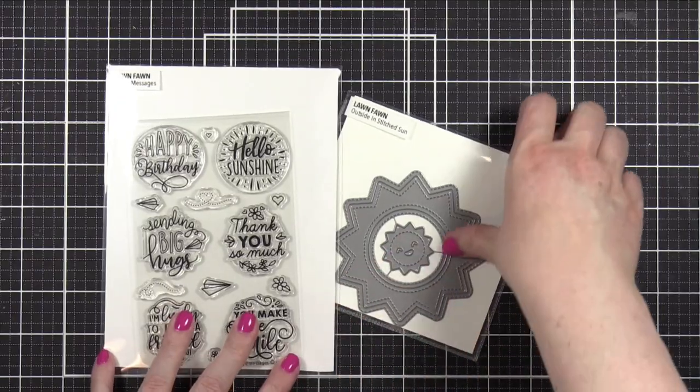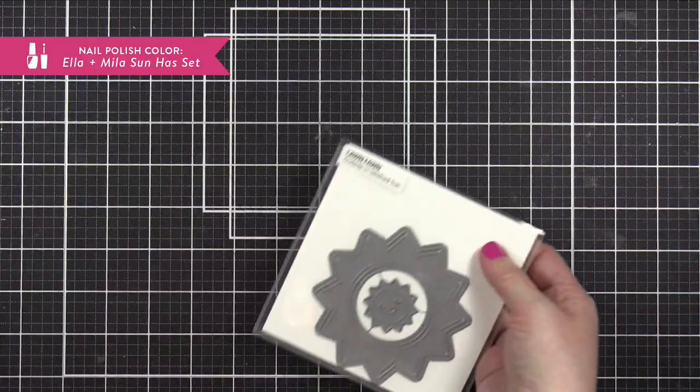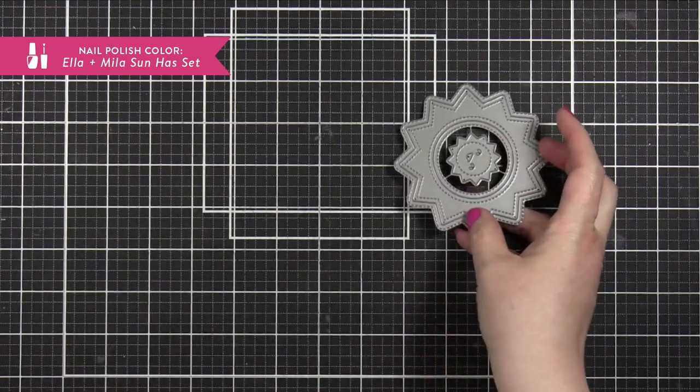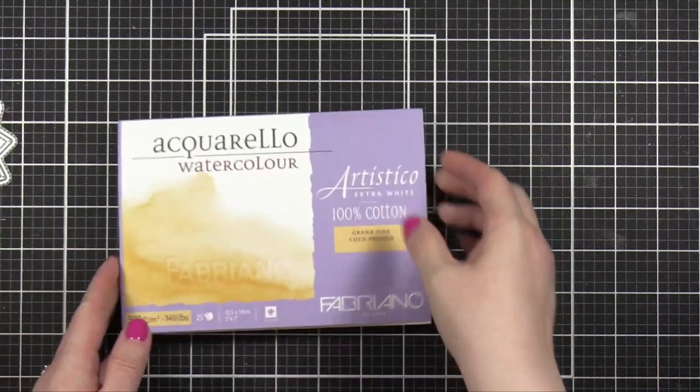Today I'm going to be using these really fun products from Lawn Fawn, the Magic Messages stamp set and this die set with the sun to create a very simple and easy card.